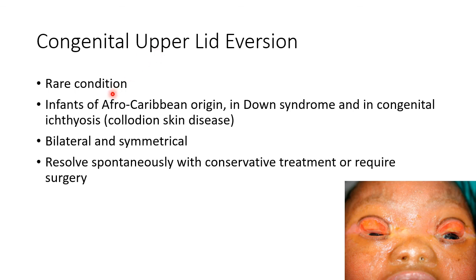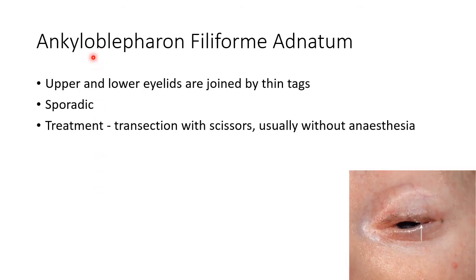Now let us discuss about congenital upper lid eversion. It is a rare condition usually seen in infants of Afro-Caribbean origin, in Down syndrome, and in congenital ichthyosis (collodion skin disease). It is usually bilateral and symmetrical. This picture shows congenital upper lid eversion in a case of ichthyosis. Congenital upper lid eversion usually resolves spontaneously with conservative treatment, or in severe cases may require surgery.